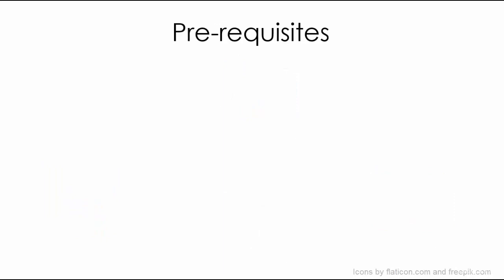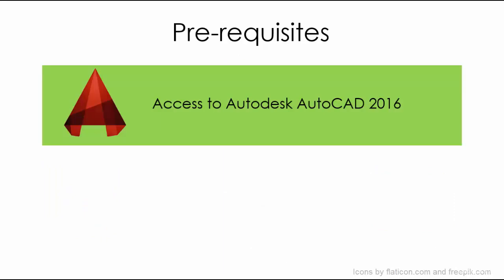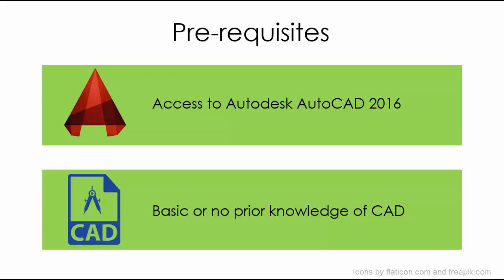The prerequisites for this course are very little. You need to have access to Autodesk AutoCAD 2016 software, though it's not mandatory — you can work with prior versions as well. If you don't have access to any version, you can go to their official website and download a free student version for three years. This course also assumes that you know little or nothing about Autodesk AutoCAD, and it has been taught keeping that in mind.